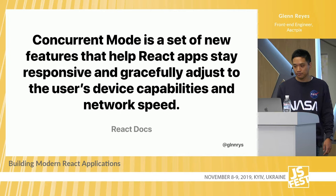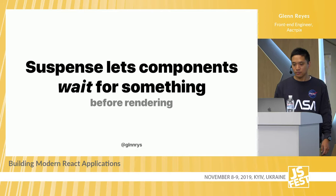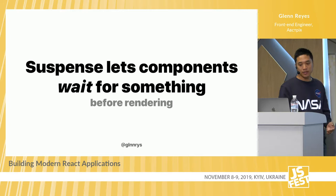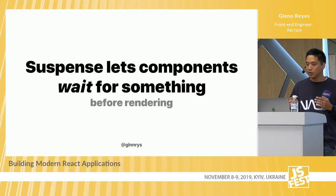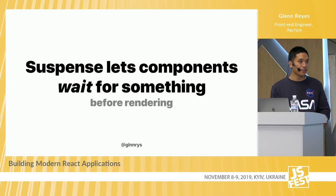One of the mechanisms to achieve this is Suspense. What is Suspense? Suspense lets components wait for something before rendering. As of today in the stable release, it only supports loading components dynamically with the React.lazy API — also known as code splitting. In the current experimental release, we're seeing ways to use Suspense for data fetching and concurrent rendering. The general idea is to allow components to suspend their render if they need extra data from external sources, and once all the information is there, React will retry rendering the component.